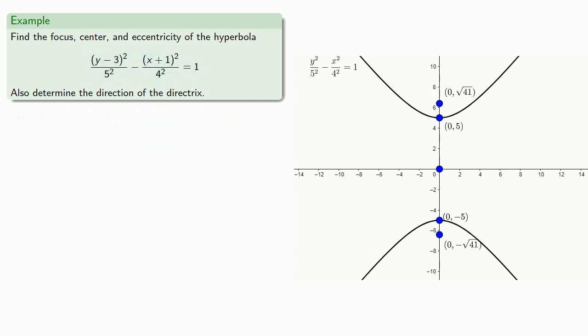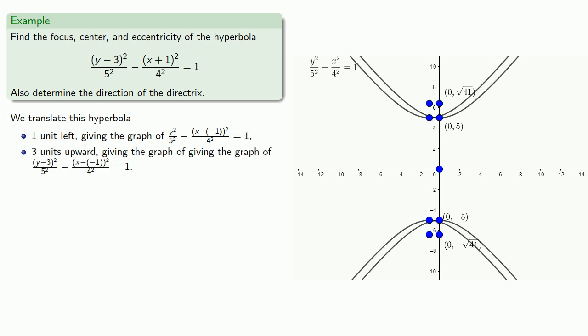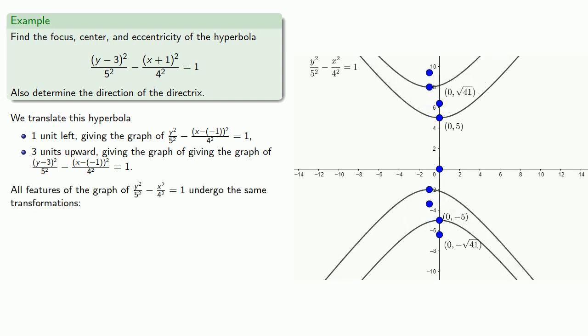So we need to add a few translations. We'll translate this hyperbola one unit to the left, then three units upward. What's important to recognize is that all features of the graph undergo these same transformations. So our center moves one unit to the left and three units up, to (-1,3).